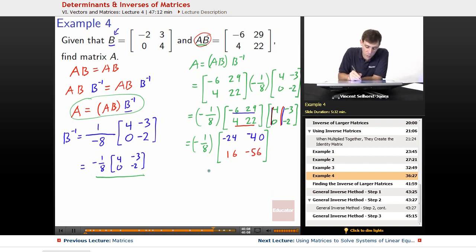at this point, we can use our -1/8. We simplify this out. We get -1/8 times -24 will become 24 divided by 8 is 3. Negatives cancel out, so we get positive 3. -1/8 times -40 becomes positive 5. -1/8 times 16 becomes -2. -1/8 times -56 becomes positive 7. So, we've got A equals [3, 5; -2, 7], and there we are.